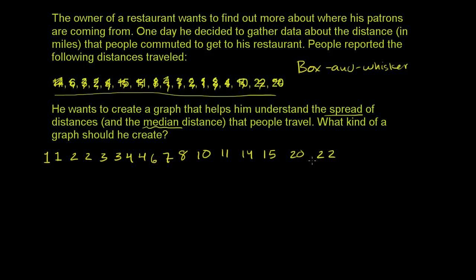Let me just make sure I haven't skipped or gotten any duplicates. Counting through: 1, 2, 3, 4, 5, 6, 7, 8, 9, 10, 11, 12, 13, 14, 15, 16, 17 people were surveyed — 17 patrons of the restaurant. Counting the ordered list confirms we also have 17 values. It seems like I got all of them and they're ordered correctly.